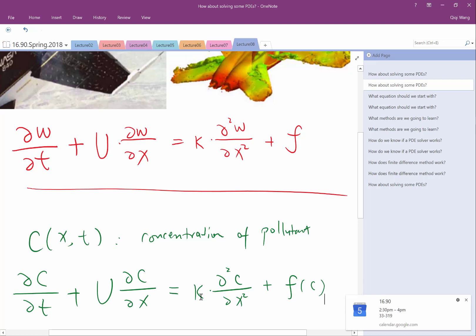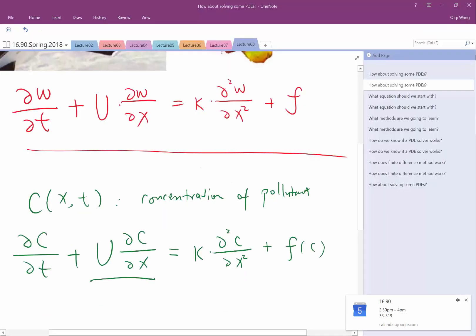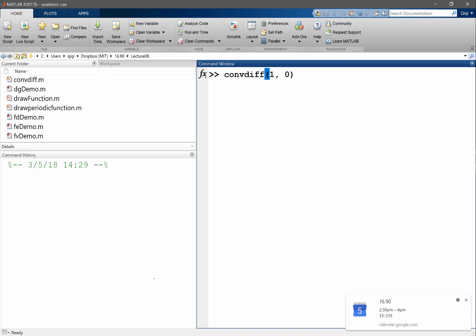So let's first concentrate on the first term. Let's give it a non-zero U, but zero kappa so that we only have an equation with the first term. And we also pick F to be zero so that we only see the effect of the first term, the U term. For example, what kind of U would you like me to choose? Why don't we just start with one, and set kappa to zero.